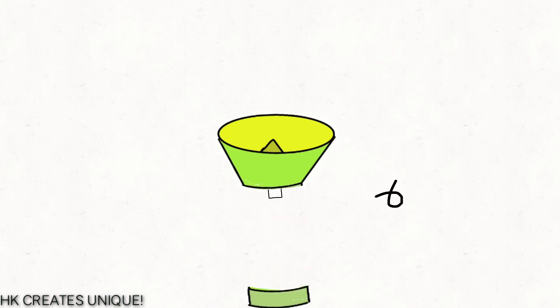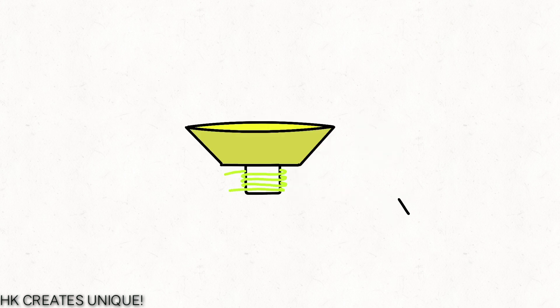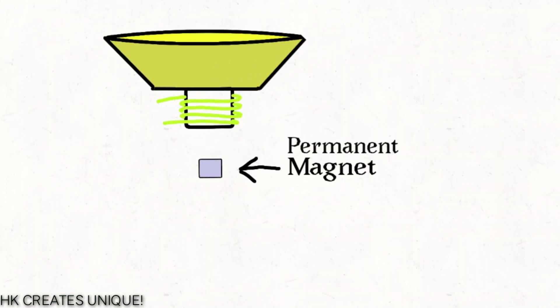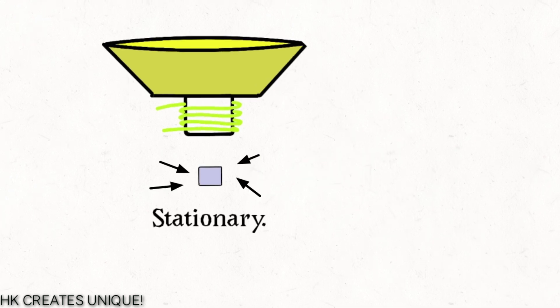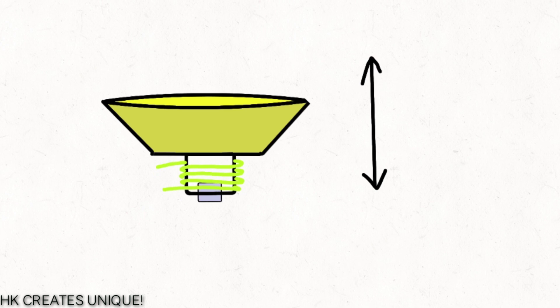At the back of the diaphragm there is a coil attached. This coil is also known as a voice coil. Below the voice coil there is a permanent magnet. Note that the magnet is stationary, but the diaphragm along with the voice coil can move back and forth.